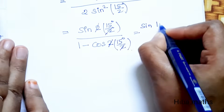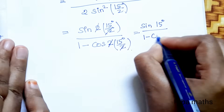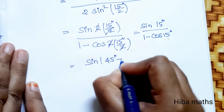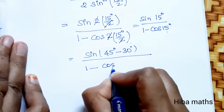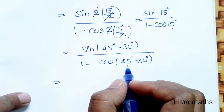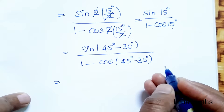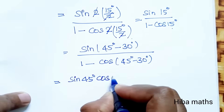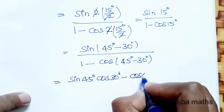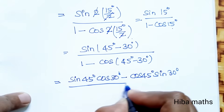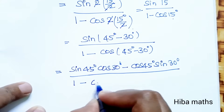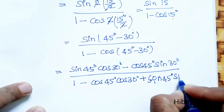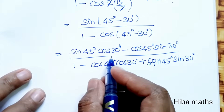So we have sin(15°) divided by (1 - cos(15°)). We write 15° = 45° - 30°. Applying the formula sin(a - b) = sin(a)·cos(b) - cos(a)·sin(b) and cos(a - b) = cos(a)·cos(b) + sin(a)·sin(b), substituting a = 45° and b = 30°.